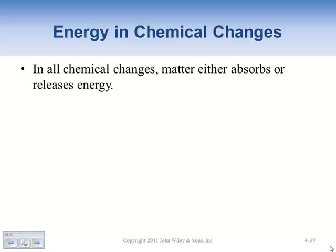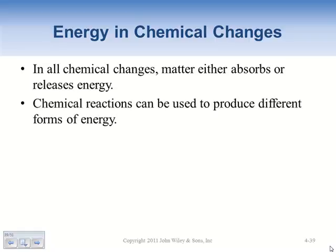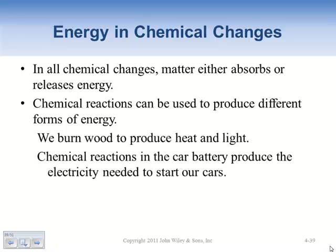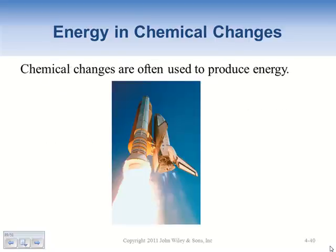Let's talk about the general properties of energy in chemical changes. In all chemical changes, matter either absorbs or releases energy. When it goes through a chemical change, it either takes in energy and gets colder, or releases energy and feels warm when the reaction occurs. Chemical reactions can be used to produce different kinds of energy - burning wood to get heat and light, or chemical reactions in a battery to produce electricity.